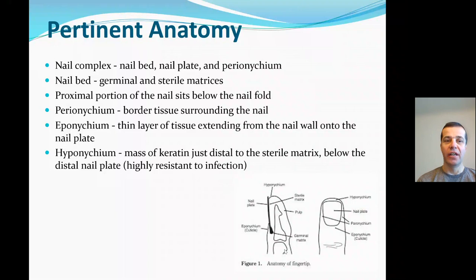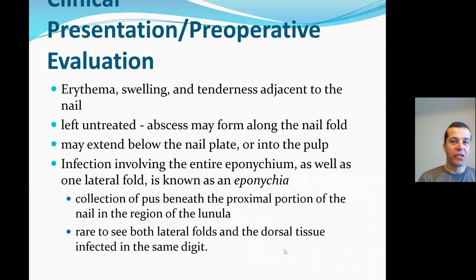The hyponychium is extremely resistant to infection and would not allow bacteria to cross through it. Clinical presentation of paronychia is erythema, swelling, and tenderness adjacent to the nail. If left untreated, it may form an abscess along the nail fold, occasionally extending below the nail plate, creating what is called a horseshoe abscess or spreading into the finger pulp.